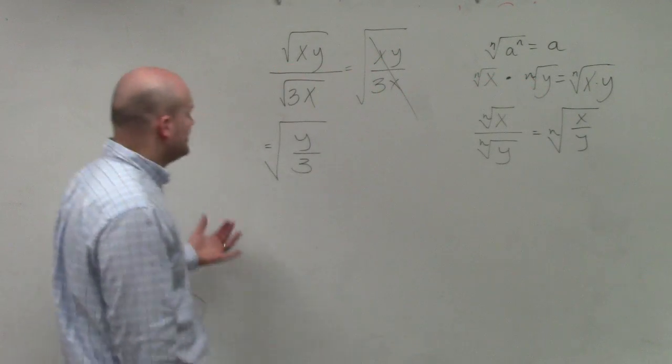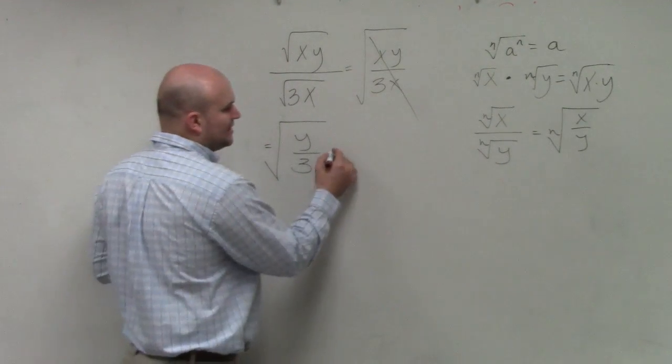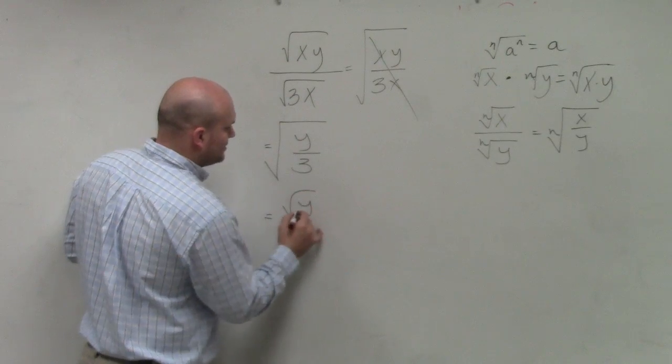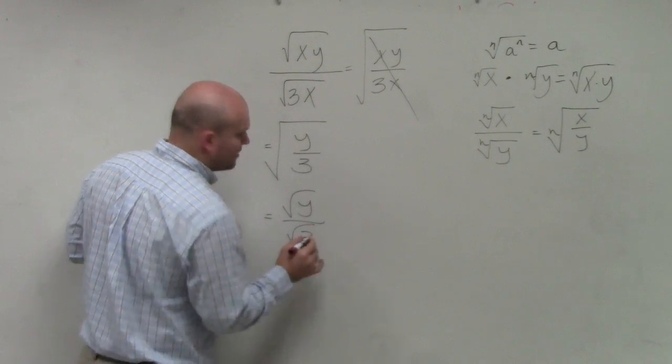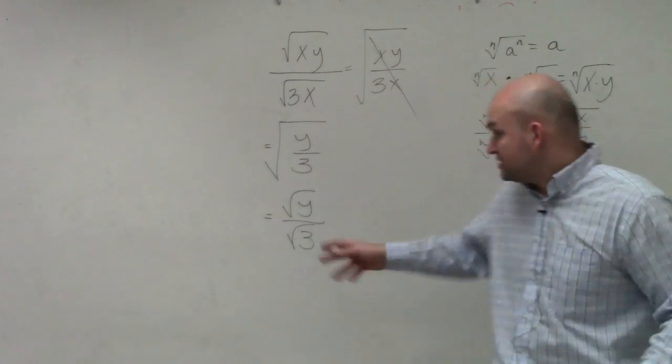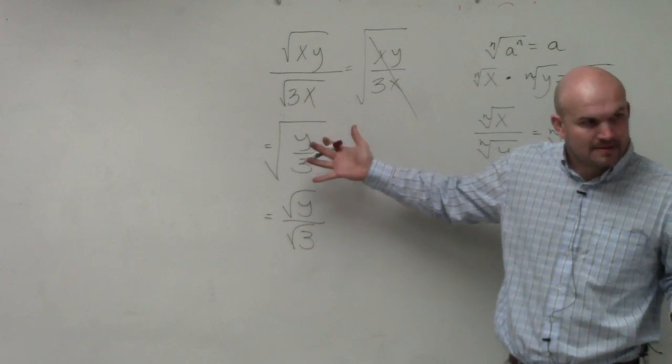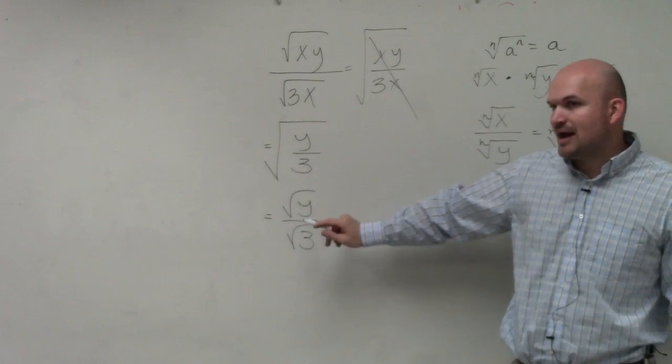So it kind of comes into a little bit of issue. When rationalizing the denominator, we do not want a radical in the denominator. So if I break this apart right now, you guys can see that there is a radical in the denominator, right? Or we don't want to take the radical of a fraction, OK? So we need to get rid of this radical.